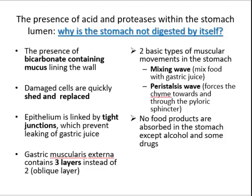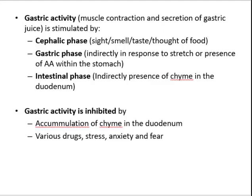There are two basic types of muscular movements in the stomach: mixing waves, which mix ingested material with gastric secretions, and peristalsis waves, which are more powerful and force chyme towards the pyloric sphincter. Each peristalsis wave forces a small amount of chyme through the pylorus. Note that food products are not absorbed in the stomach, except alcohol and some drugs.